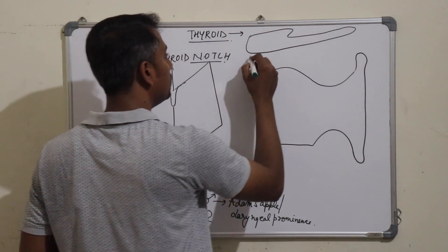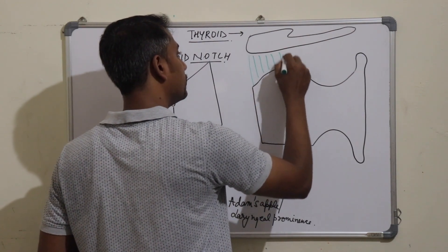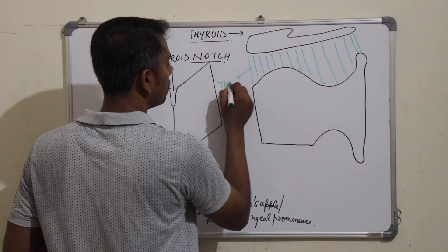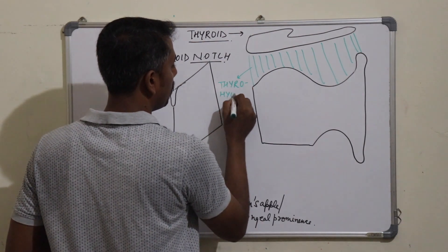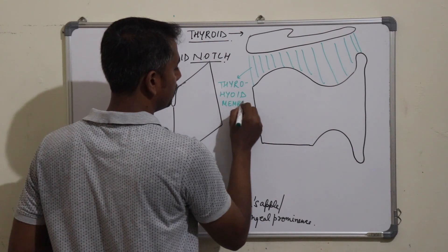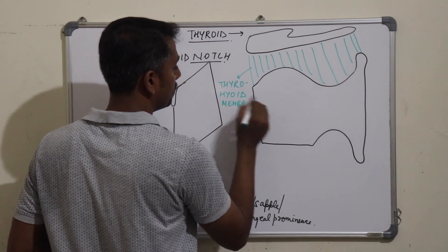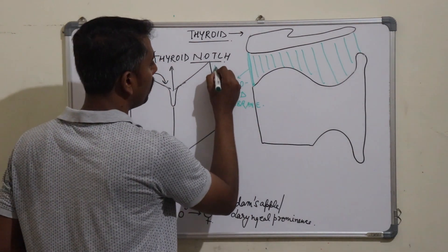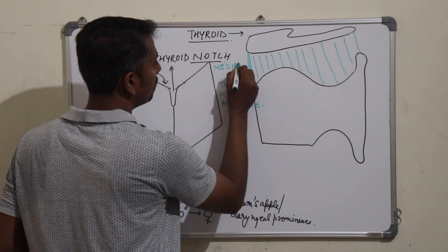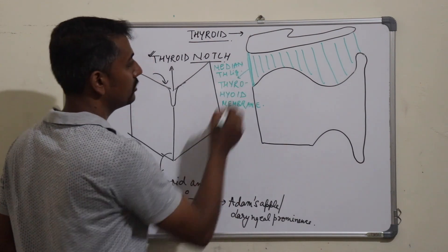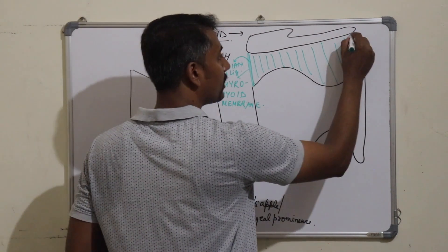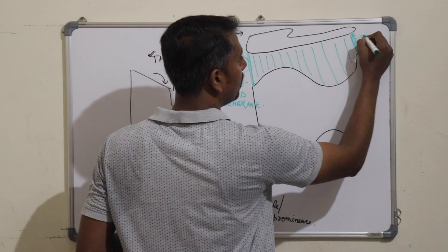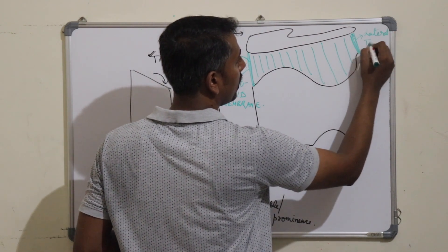The membrane connecting the thyroid cartilage to the hyoid bone is known as the thyrohyoid membrane. The median part of this thyrohyoid membrane gets thickened to form the median thyrohyoid ligament, and the lateral part of this thyrohyoid membrane also gets thickened to form the lateral thyrohyoid ligament.